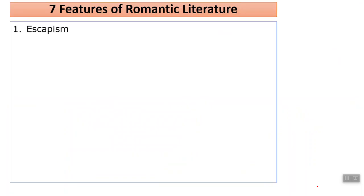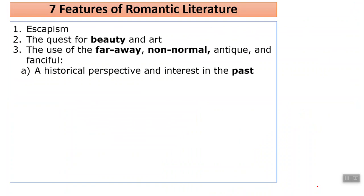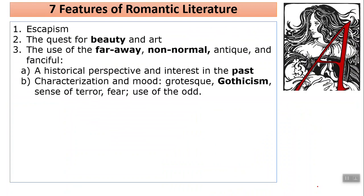So seven features of Romantic literature. It's meant to be escapism. You have things taking place — especially in European stories — in large castles. Here in the United States it's on farms out in the middle of nowhere, in the woods. There's a quest for beauty and art, the use of the faraway, the non-normal, the antique, and the fanciful. 'Antique' meaning looking at even earlier American history. Washington Irving sort of looks back at old fairy tales and reinterprets them, placing them in New York State and other American settings. Historical interest in the past, like the Scarlet Letter.